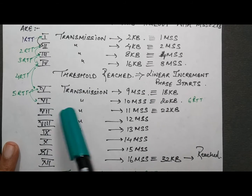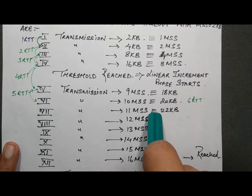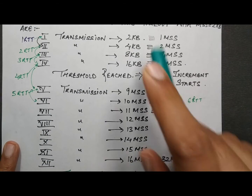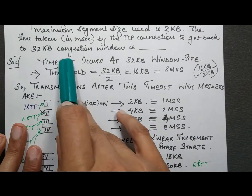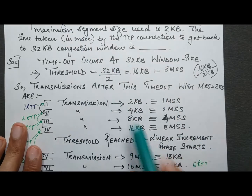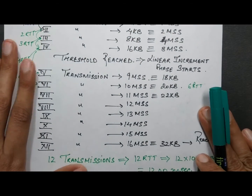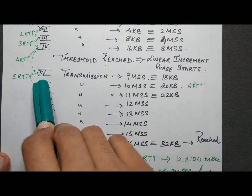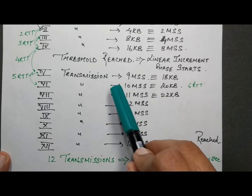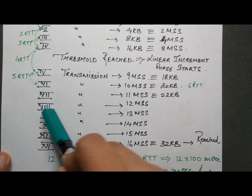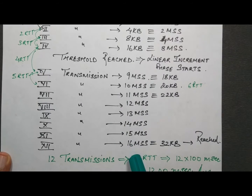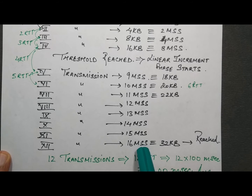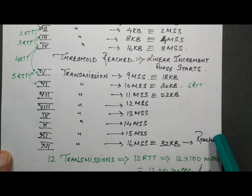In the linear increment phase: the 5th transmission is 9 MSS, 6th is 10 MSS, 7th is 11 MSS, 8th is 12 MSS, 9th is 13 MSS, 10th is 14 MSS, 11th is 15 MSS. We need to reach 16 MSS, which is 32 KB.